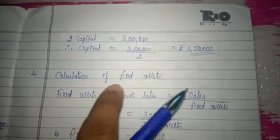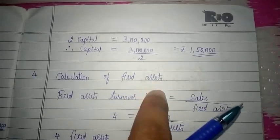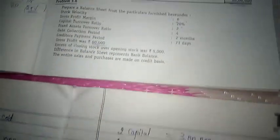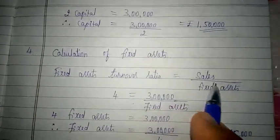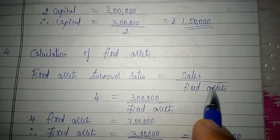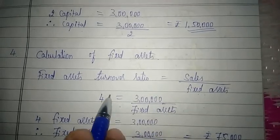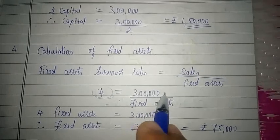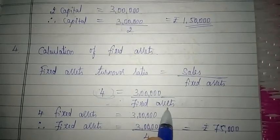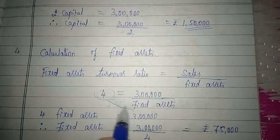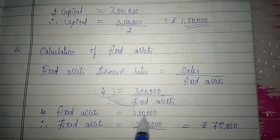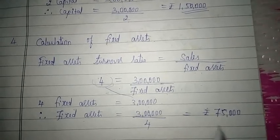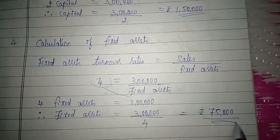After calculating capital, we calculate fixed asset value using the fixed assets turnover ratio of 4 times. Formula: Fixed Assets Turnover Ratio = Sales ÷ Fixed Assets. So 4 = 3,00,000 ÷ Fixed Assets. Cross-multiplying: 4 × Fixed Assets = 3,00,000, therefore Fixed Assets = 3,00,000 ÷ 4 = rupees 75,000.